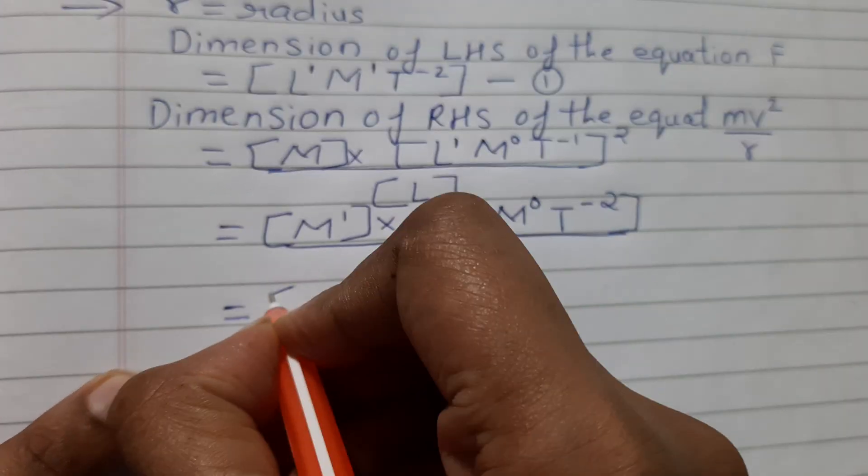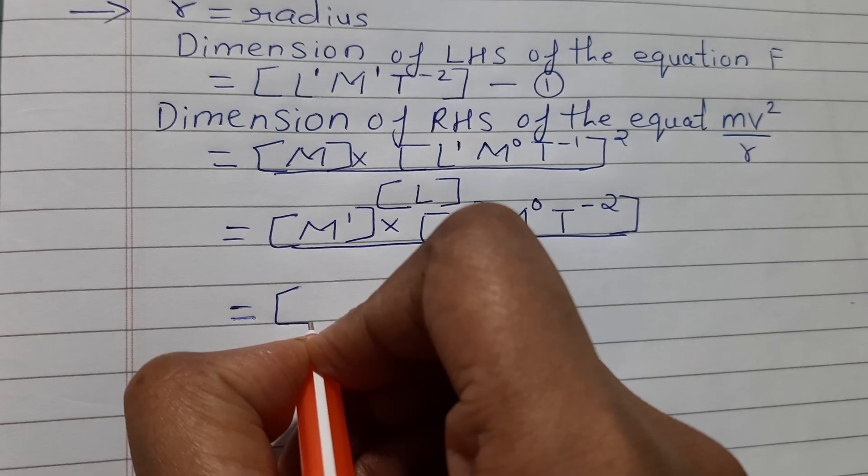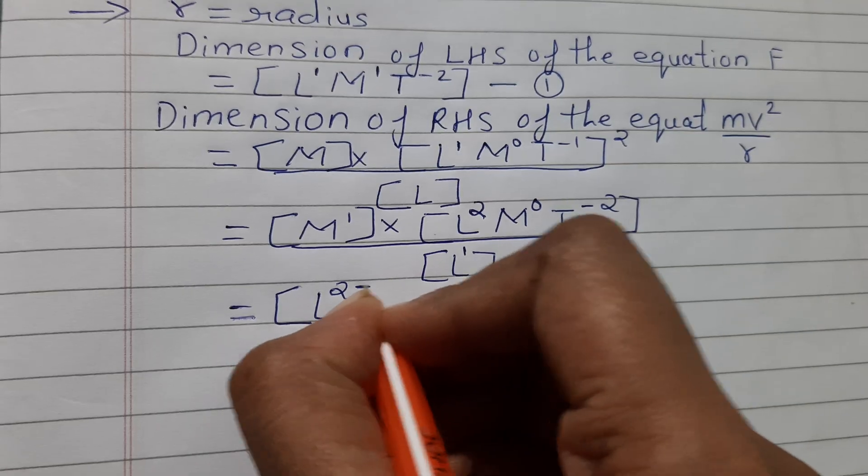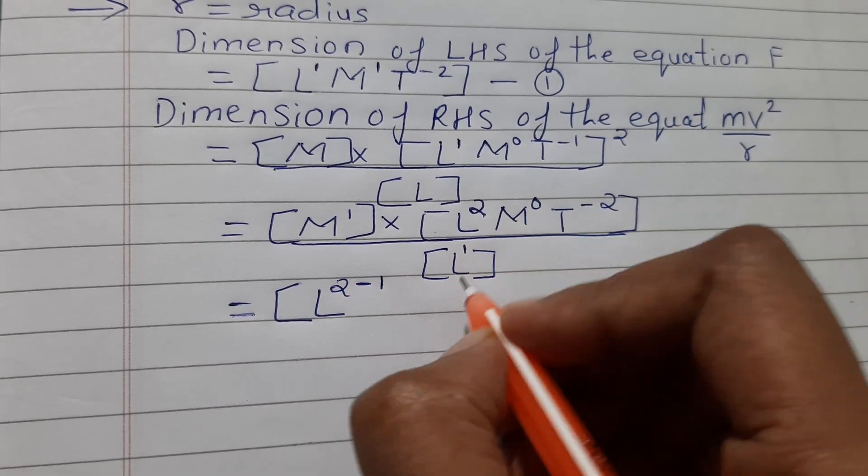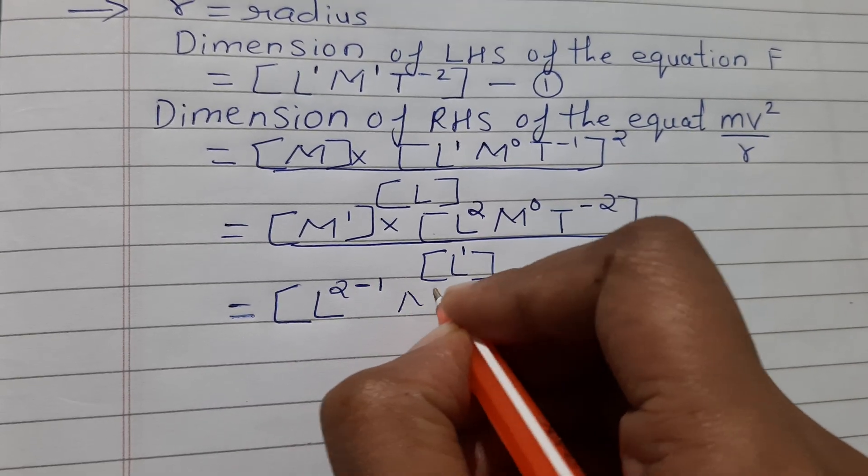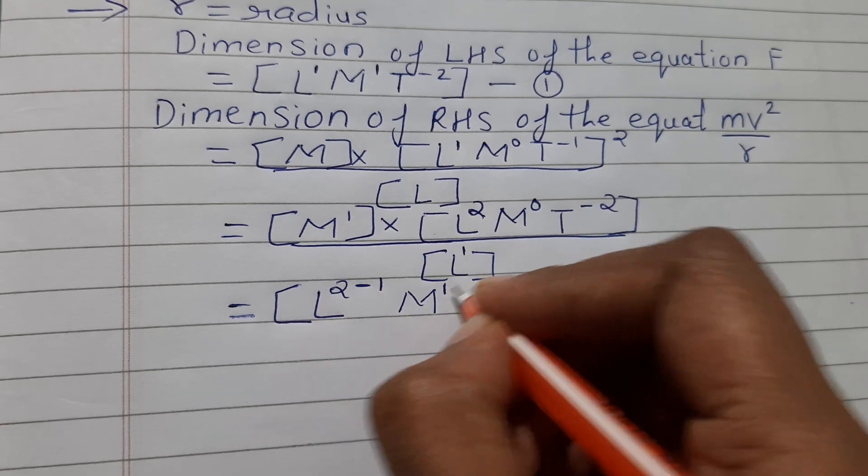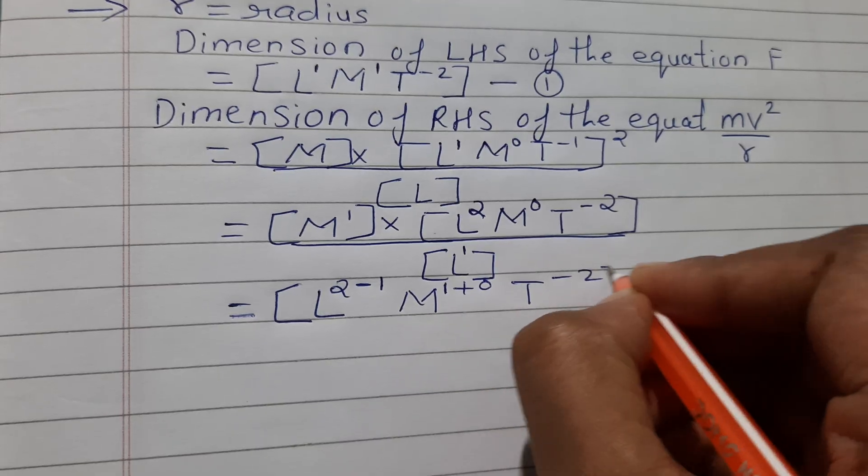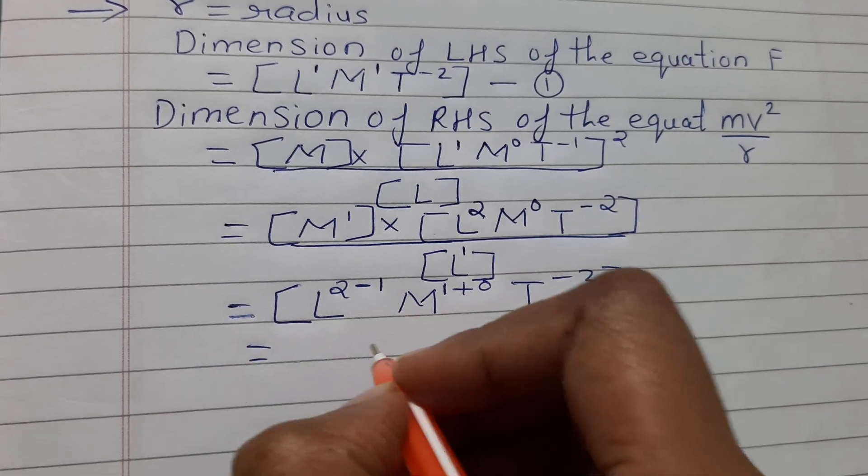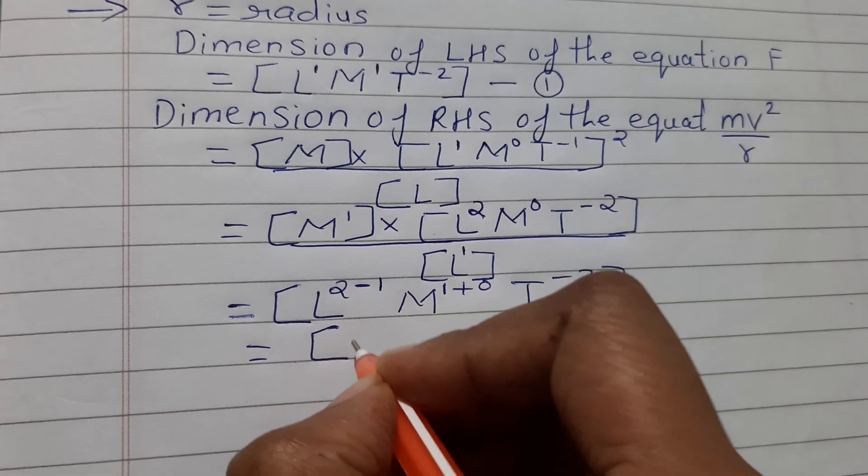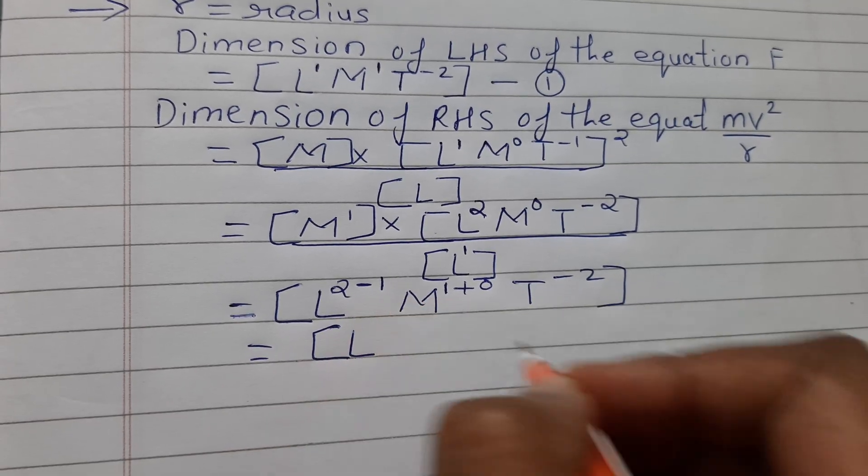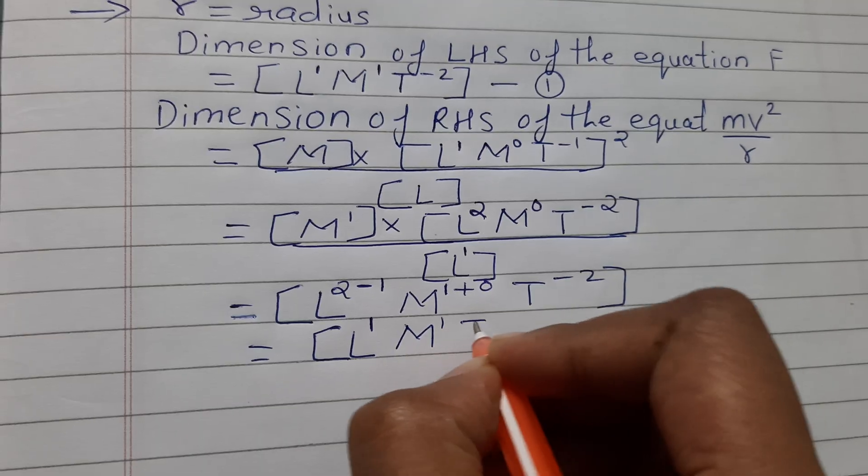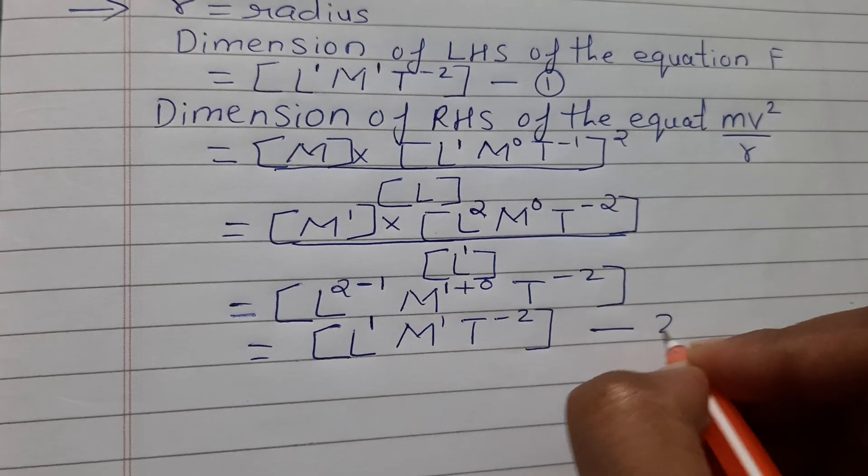m is 1 plus 0, t is minus 2. So this equals: l raised to 2 minus 1 is positive 1, m is 1, t is minus 2. Take this as equation 2.